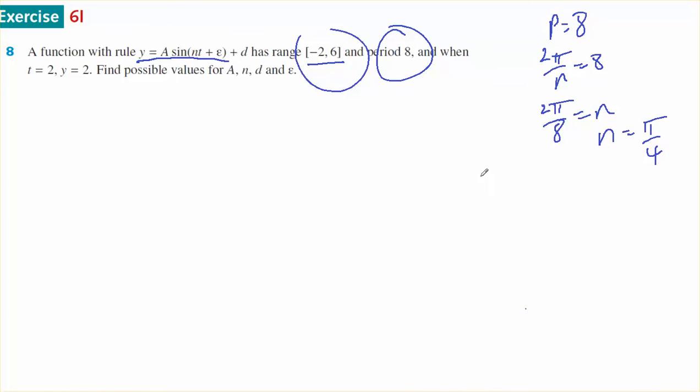The function has a range of -2 to 6. 6 plus -2 divided by 2 will give us the middle, which is 2, so d equals 2. And 2 up to 6 is an amplitude of 4.